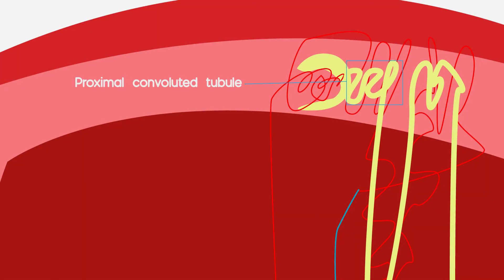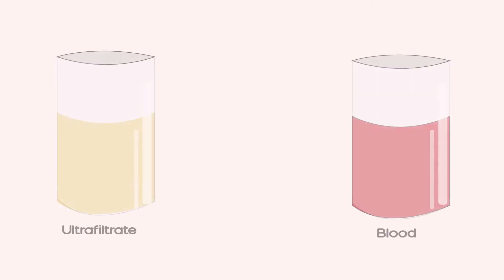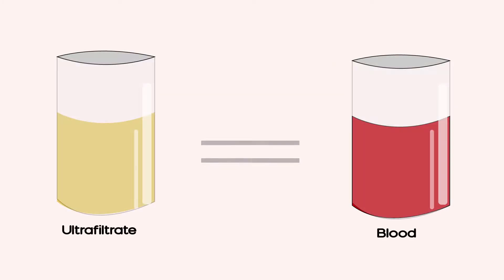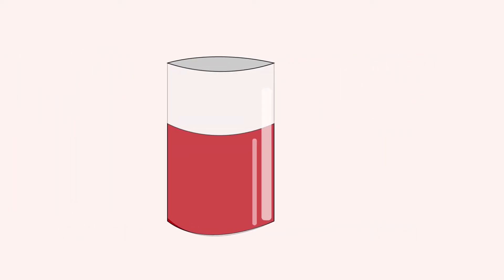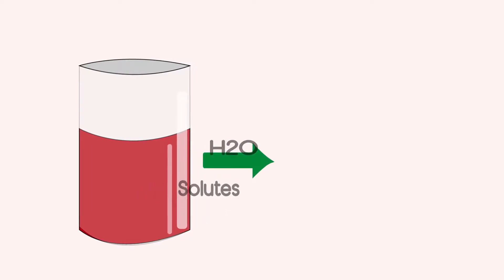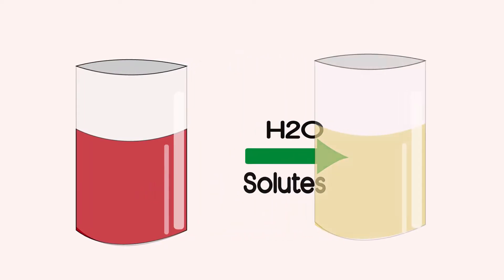The fluid that is ultrafiltered into the Bowman's capsule goes into the proximal tubule, or the proximal convoluted tubule, of the nephron. Importantly, this ultrafiltrate is isotonic to blood, or equal in concentration to blood — roughly 300 milliosmoles. The reason why the ultrafiltrate is equal concentration to blood despite everything that's been filtered out is because equal parts water and solutes have been filtered out of the blood.